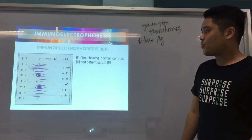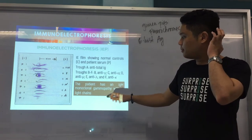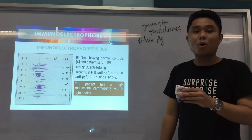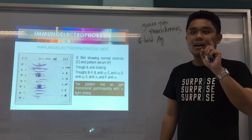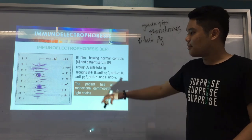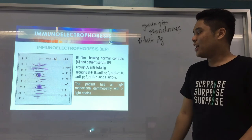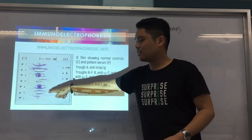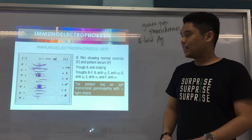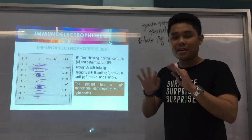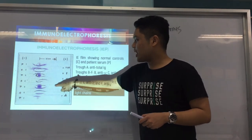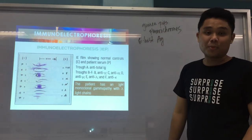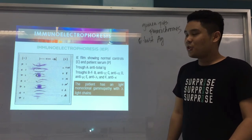Here's an example of a real immunoelectrophoresis result. A patient with a monoclonal gammopathy — where there's an increase in a specific single type of antibody in the serum — has IgM gammopathy with lambda light chains. You compare the shape of the precipitate lines between the patient and the control. For IgM, the patient's precipitate lines have a different shape compared to the control. The point is that it's immunodiffusion with electrophoresis applied, charged with electricity.